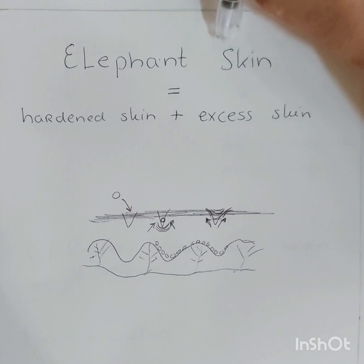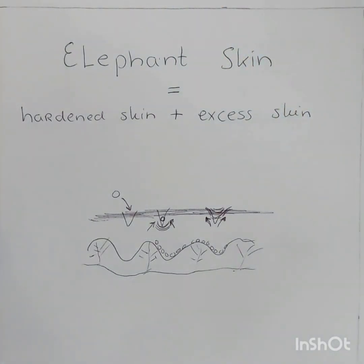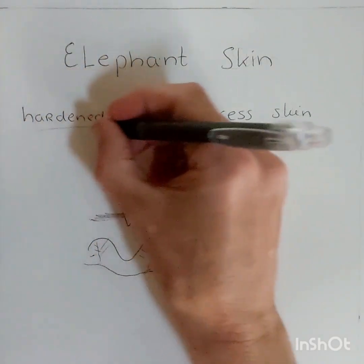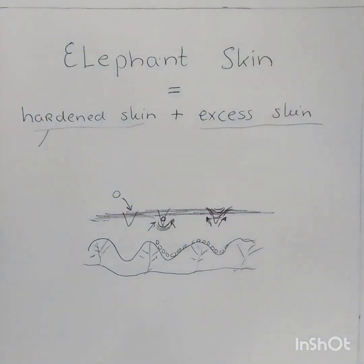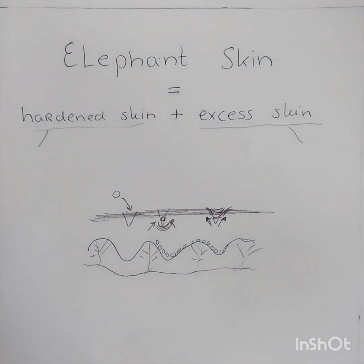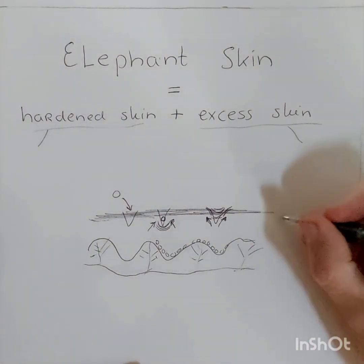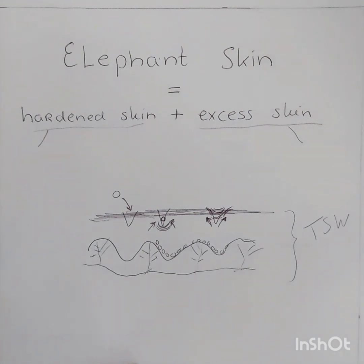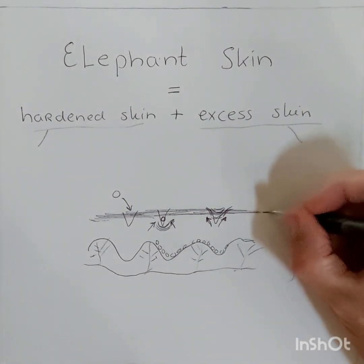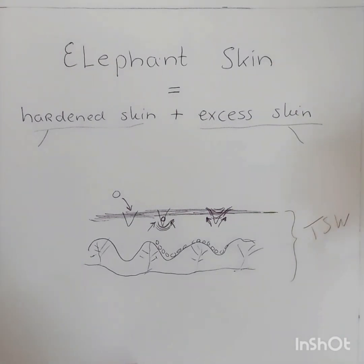Now let's have a look at the elephant skin mechanism. Elephant skin is a combination of hardened skin and excess skin, and in this case the hardened skin feels more like leather — a leather kind of structure — but there is also excess skin. Again we have the skin in TSW, which is more thin, and in more heavy, more severe cases of TSW the skin is also damaged, often opened, you have been scratching, and it is very impaired.